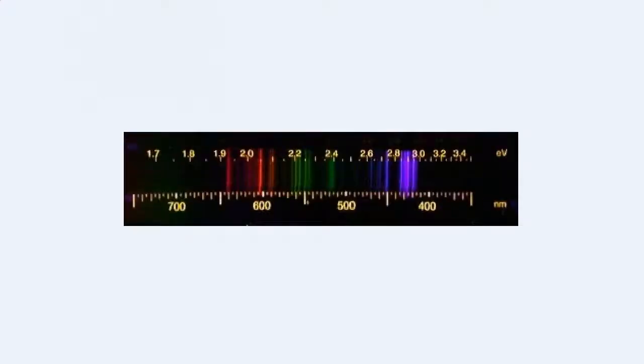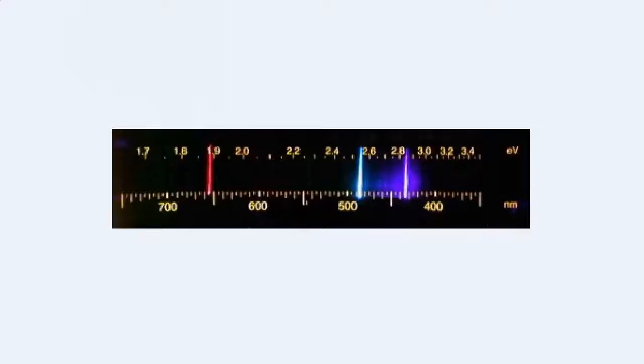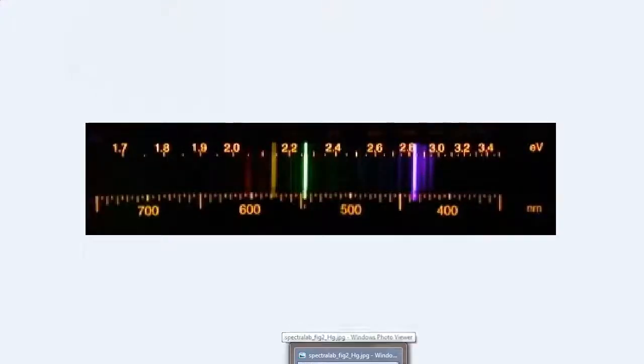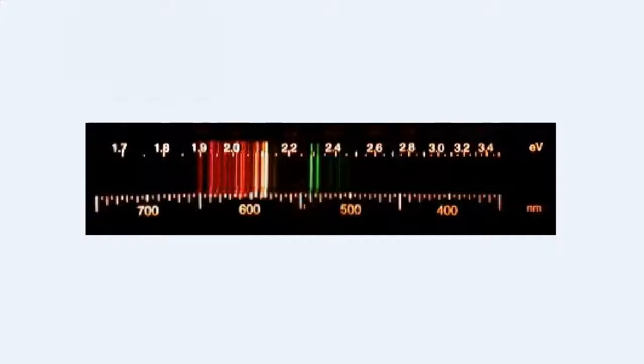All right. So again, this one is argon. This video or this picture is the spectroscope, the spectrum for helium, sorry, hydrogen. This is hydrogen. This one is helium. Here's mercury. And last but not least, we have neon, neon gas.